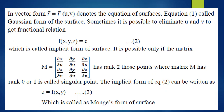Sometimes it is possible to eliminate u and v to get a functional relation f(x, y, z) = C, which is called the implicit form of the surface. This is possible only if the matrix M, whose entries are the partial derivatives ∂x/∂u, ∂y/∂u, ∂z/∂u, ∂x/∂v, ∂y/∂v, ∂z/∂v, has rank 2.